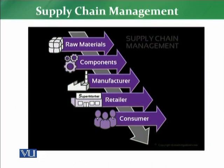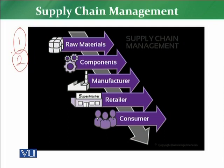To understand supply chain management completely, take any product as an example. The supply chain starts from the raw material. Then comes the procurement of raw material and then the components. For example, in electronics, the raw material leads to different components, which then move to the manufacturer — the third component of supply chain — who assembles and manufactures those components and raw materials.